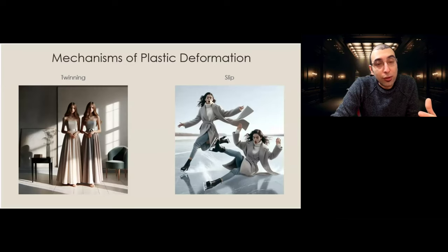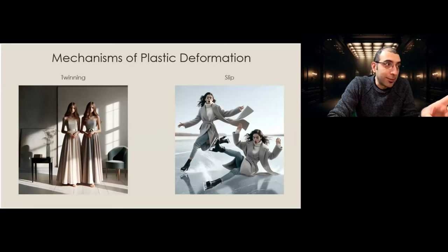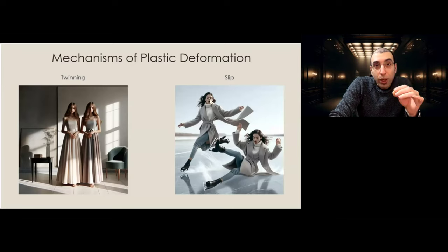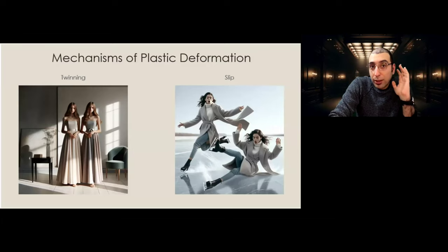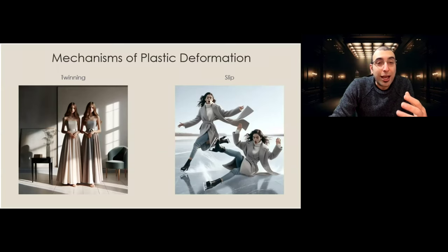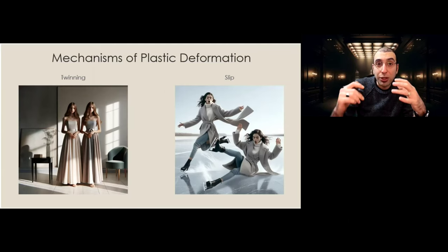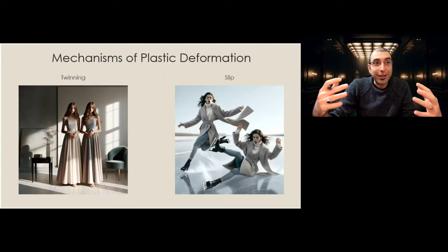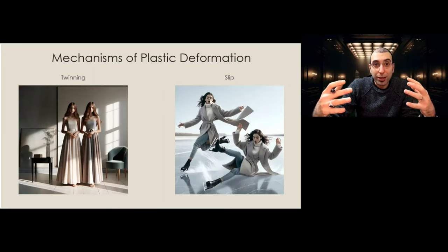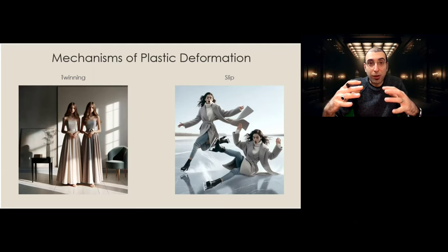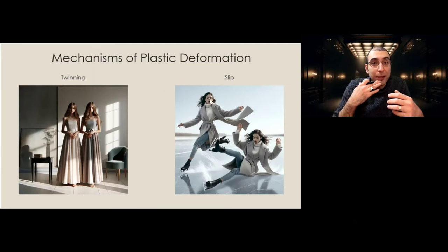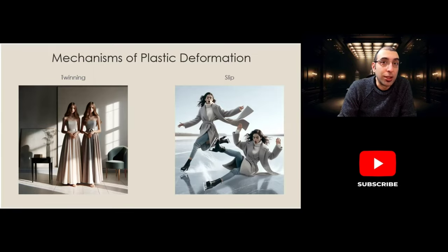I want you to take a look at this slide of twinning and slip, which are two main mechanisms of plastic deformation. Remember these images and recall them whenever you hear about plastic deformation, especially in metals, because these two are analogies for what is happening within metals.